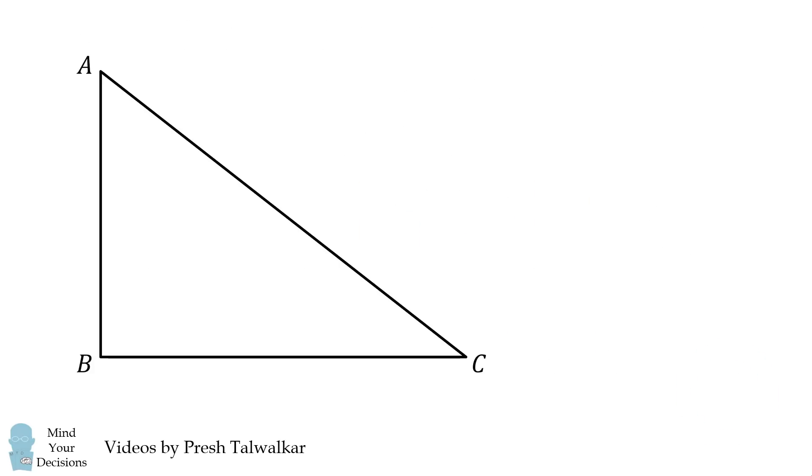Since triangle ABC has side lengths of 3, 4 and 5, it is a right triangle.